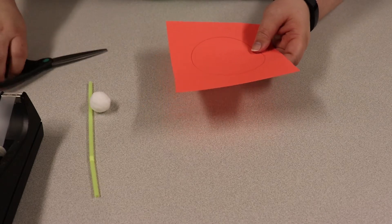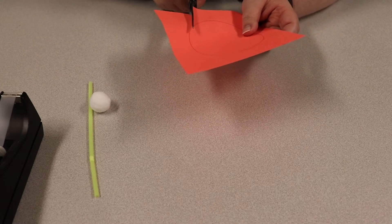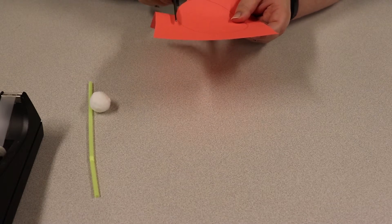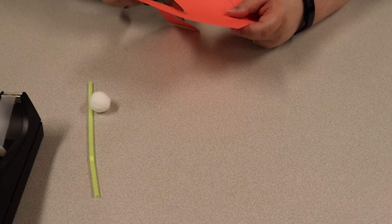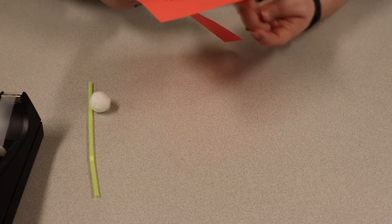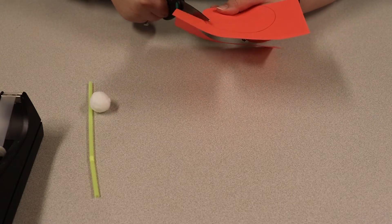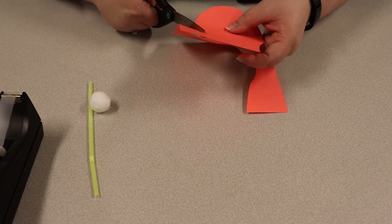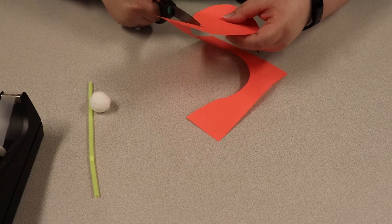Got our circle, take our scissors here, going to cut as close to the line as we can. Again, we're just trying to get as round as we can here. If it's not completely perfect, it's not going to be the end of the world.